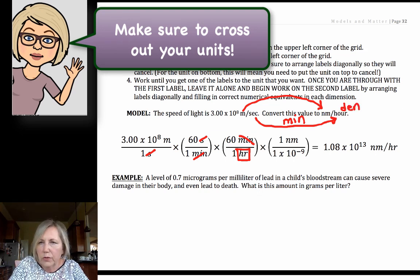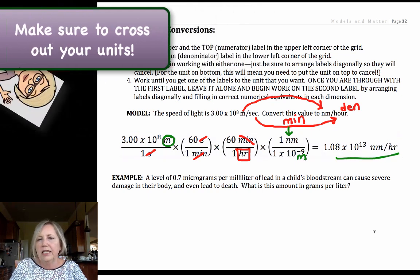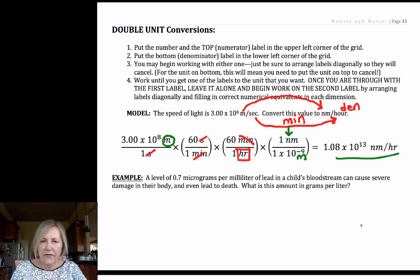Now I have my denominator taken care of. I have hours in my denominator. Now I have to deal with my numerator. I've got meters, I want to get rid of meters and go to nanometers. That's a one-step conversion. Make sure the number one is by your prefix, multiply everything in the numerator, divide by everything in the denominator, and you would have your answer to three significant figures.